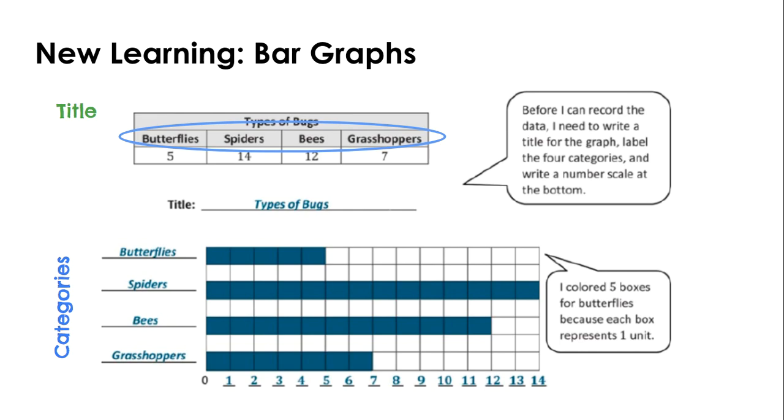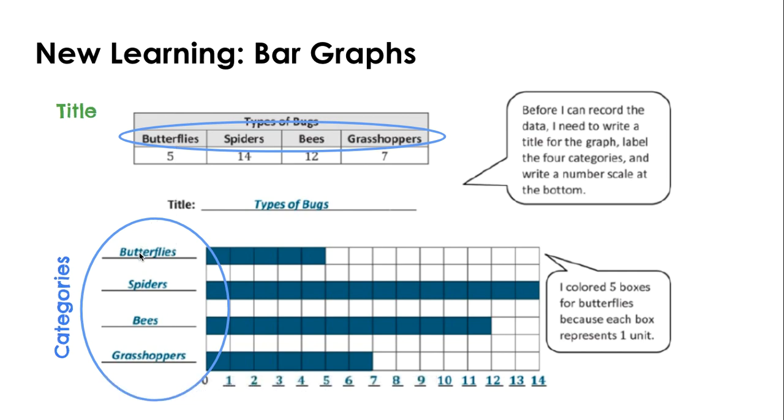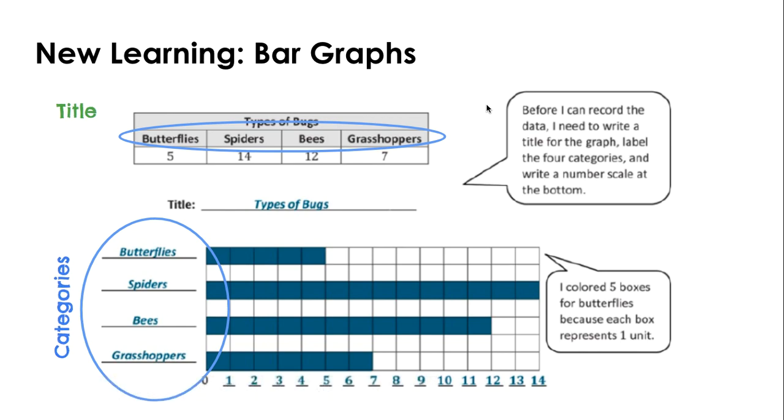Now you'll take a peek and you'll notice in your packet or on my screen where the categories are in the bar graph. So if you're noticing right here, the categories are the exact same and they stay in order. Butterflies, spiders, bees, grasshoppers. So it's really important to keep the data in the same order as you go to keep yourself organized.